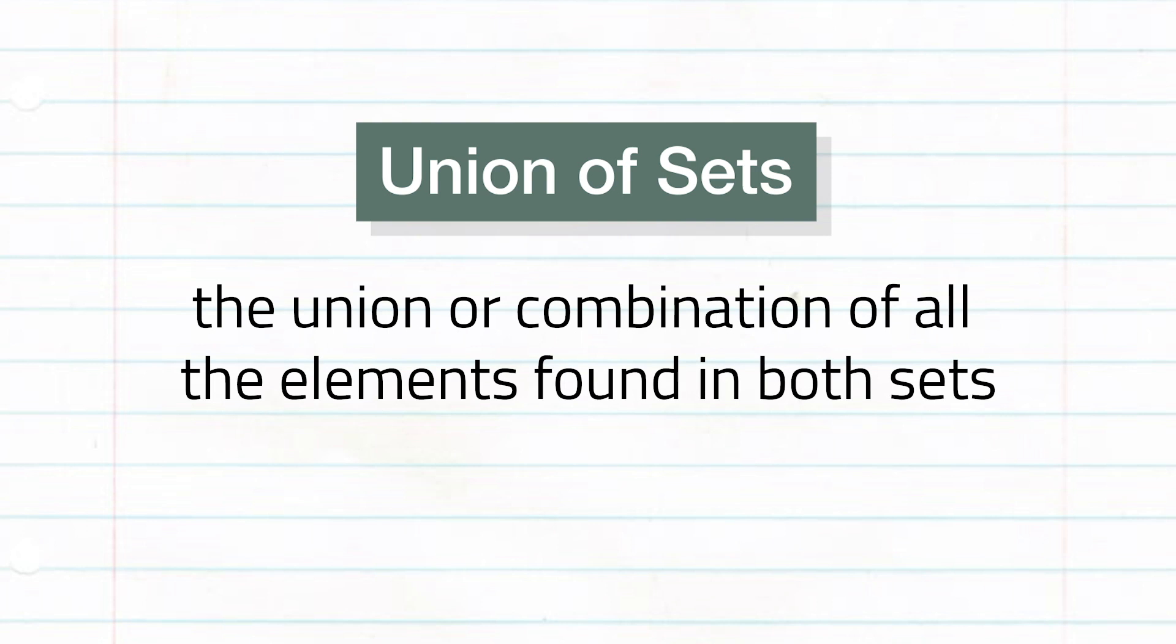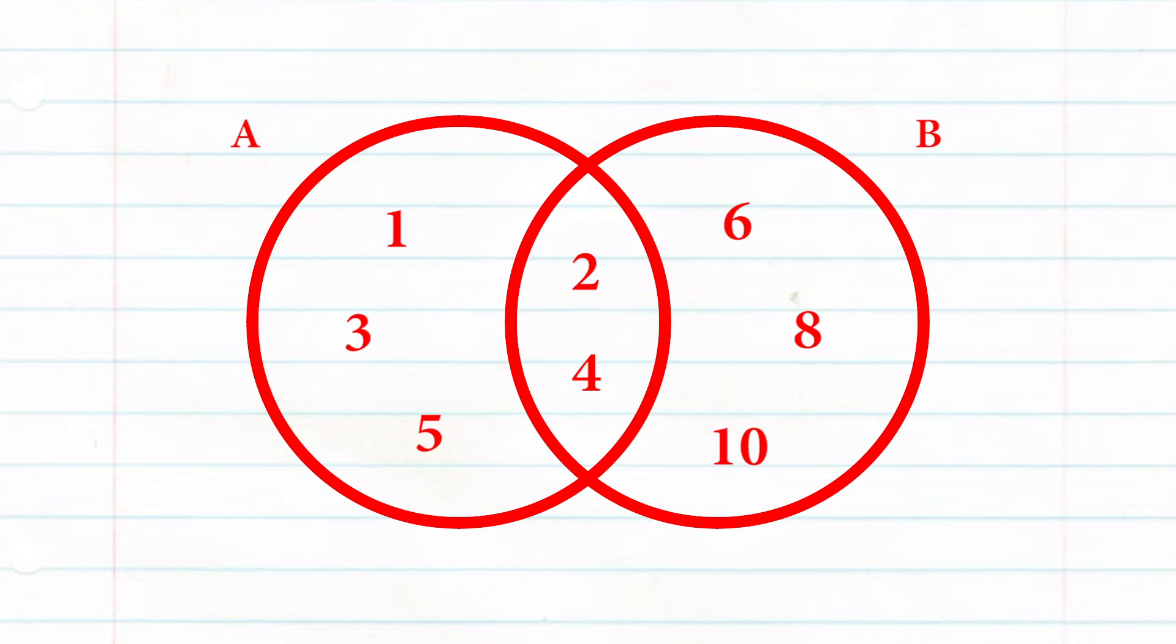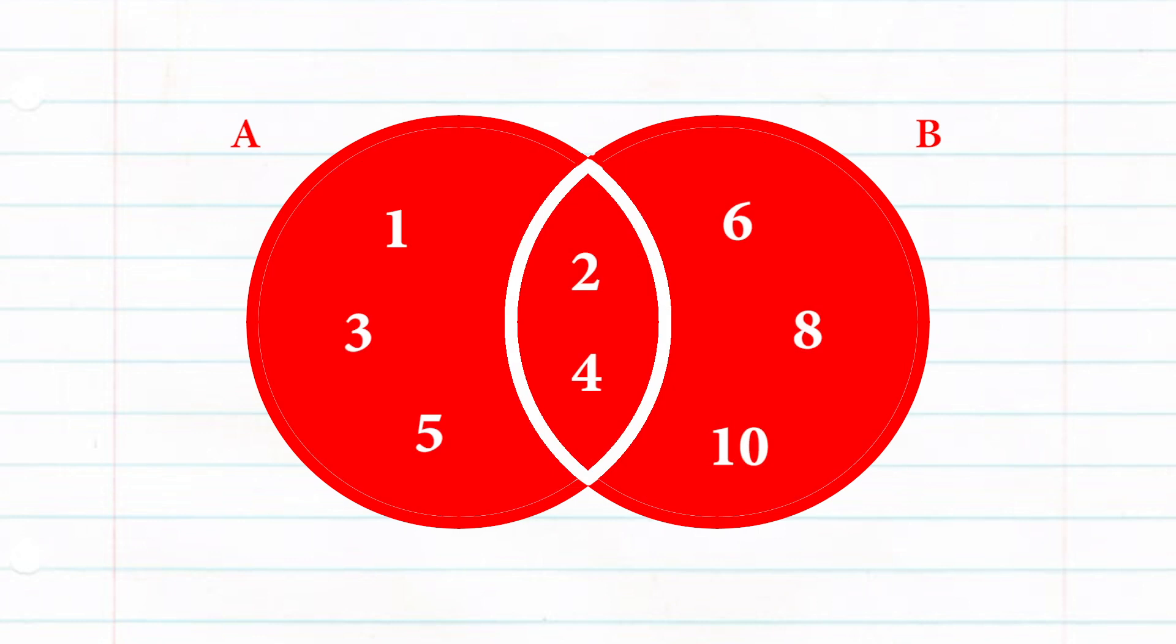Our next set operation is the union of sets. From the name itself, it is the union or combination of all the elements found in both sets. Let's go back to our previous example.